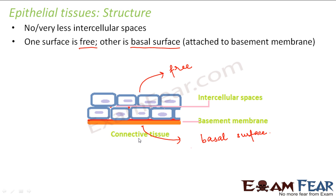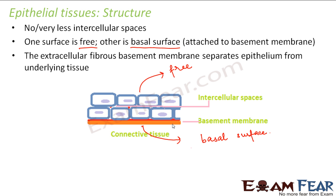Below the epithelial tissue you will find connective tissue. There is a membrane which separates the epithelial tissue from the underlying connective tissue — that membrane is known as the basement membrane, shown here in orange. This extracellular fibrous basement membrane separates the epithelium from the underlying tissue. In this way, the connective tissue is protected by the epithelium present outside it.